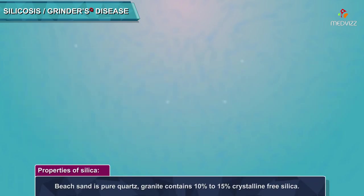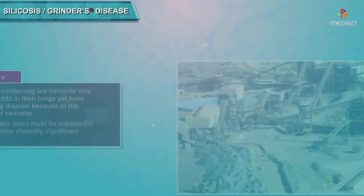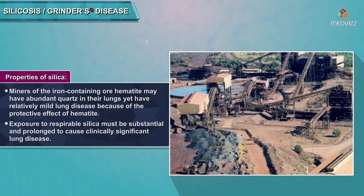The mineral silica is abundant in nature as either pure quartz or mixed in igneous rock with other minerals. Beach sand is pure quartz, while granite contains 10–15% crystalline-free silica. When mixed with other minerals, the fibrogenic effect of quartz is reduced. This fortuitous situation is commonplace, as quartz in the workplace is rarely pure.